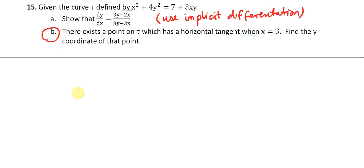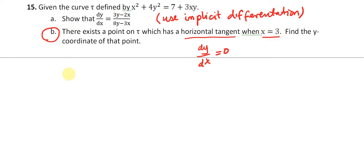Part b says: there exists a point on tau which has a horizontal tangent when x is equal to 3; find the y-coordinate of that point. A horizontal tangent means the slope is equal to 0, in other words dy/dx is equal to 0. Since x is equal to 3, what we need to do is set dy/dx equal to 0 and solve for y.